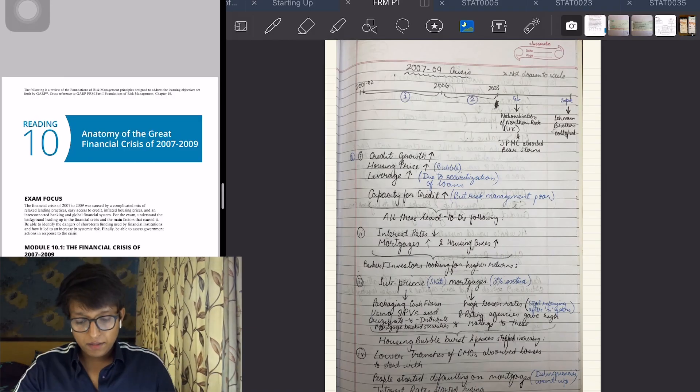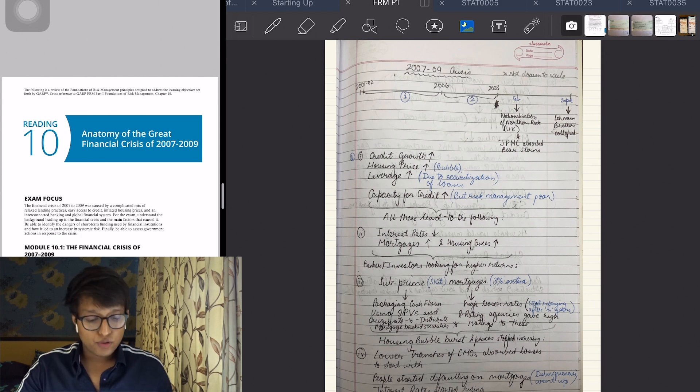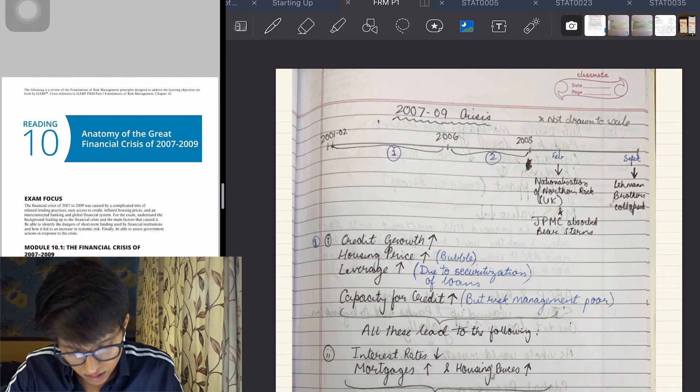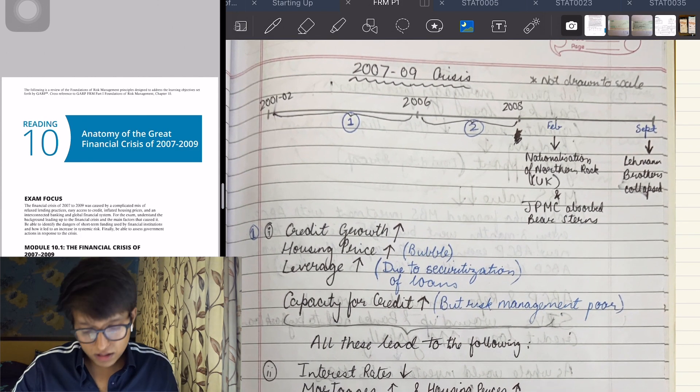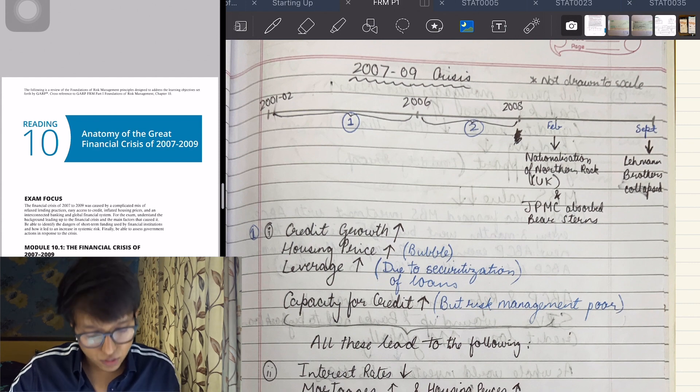Let's see the anatomy of the great financial crisis of 2007 and look at the notes first. I've divided it into a few parts: 2001 to 2006, 2006 to 2008, and 2008 onwards, covering what all happened.